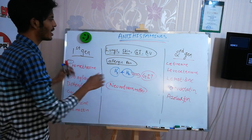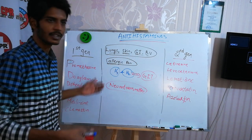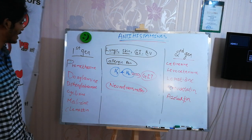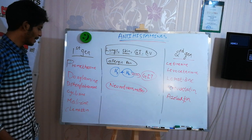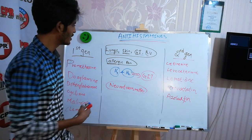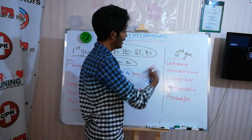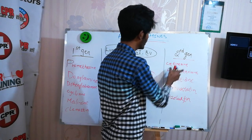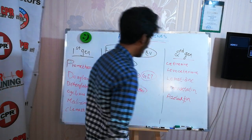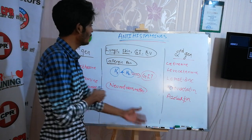Antihistamines come in two generations. First generation drugs include Promethazine, Doxylamine, Diphenhydramine, Cyclizine, Meclizine, and Clemastine — these are the older drugs. Second generation, the latest drugs, include Cetirizine, Levocetirizine, Loratadine, Acrivastine, and Azelastine.